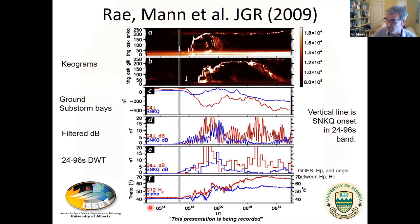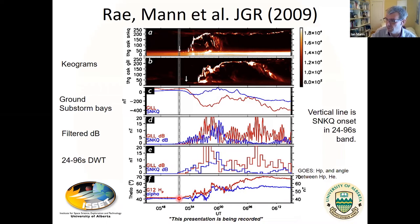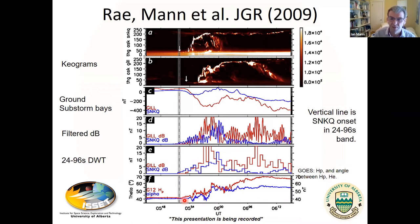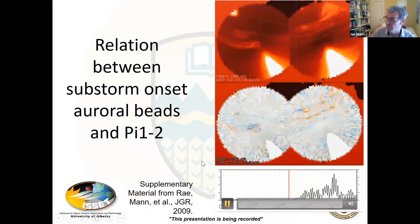This is the response at geosynchronous — these features happening at SNKQ show that the dipolarization, characterized by the change in angle and the parallel component of the field in the GOES spacecraft coordinates, is a little bit later than these very initial signatures right at the beginning of the expansion phase. I believe these PI1, PI1-2, and PI2 waves are actually a very powerful sensor of what's happening in the MI system in the very first seconds, tens of seconds, and minutes around the beginning of the expansion phase — telling us something important about the physics in the equatorial plane.